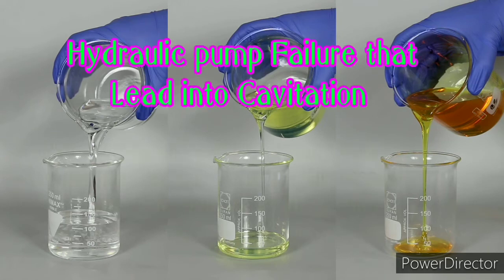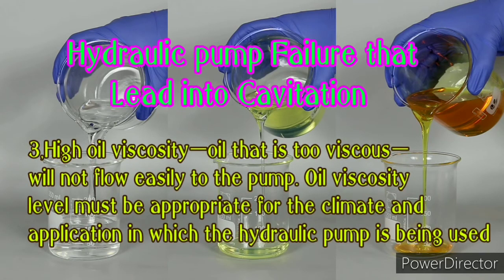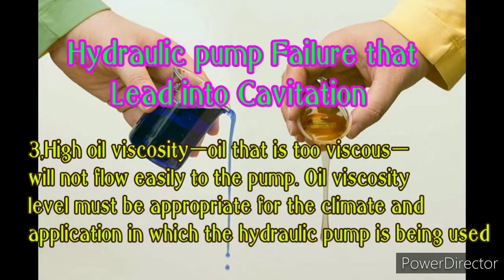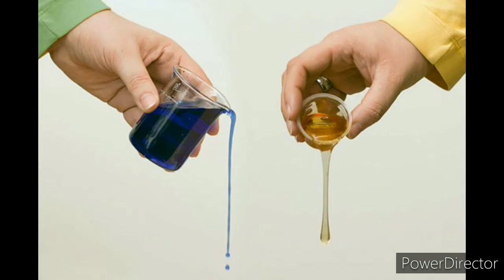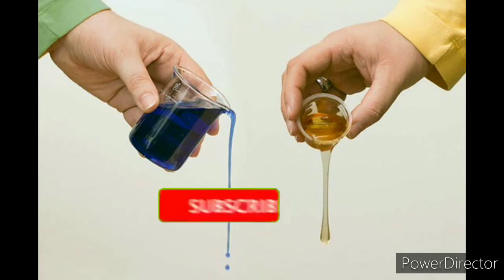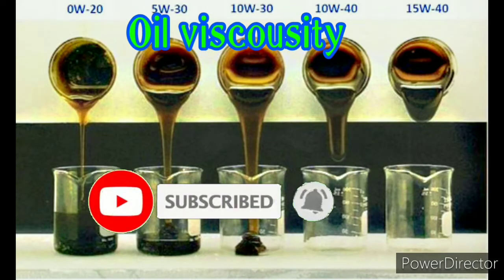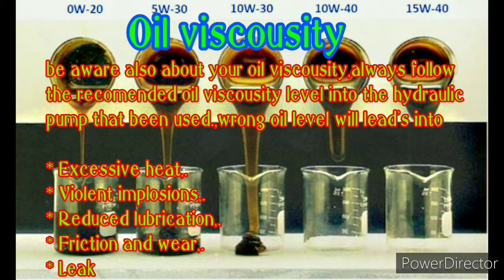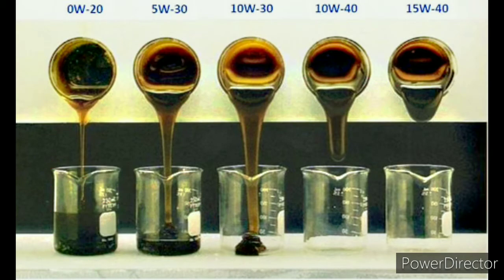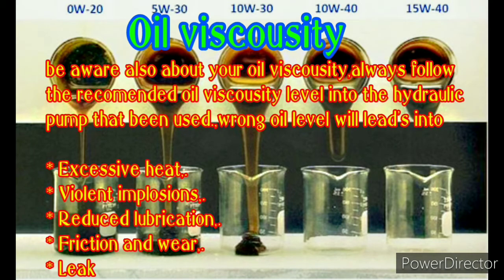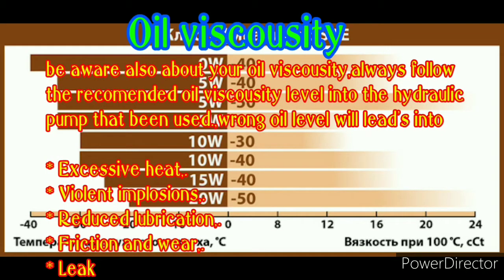Oil viscosity level must be appropriate for the climate and application in which the hydraulic pump is being used. Always follow the recommended oil viscosity level for the hydraulic pump being used. Wrong oil viscosity level will lead to excessive heat, violent implosions, reduced lubrication, friction and wear, and leaks.